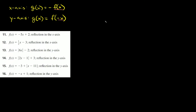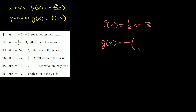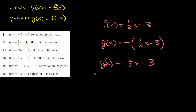Number 12: f of x is equal to one-half x minus three, reflected in the x-axis. Again, we multiply our whole function by a negative symbol. So g of x equals negative times one-half x minus three. So g of x is equal to negative one-half x plus three.